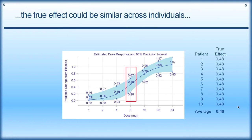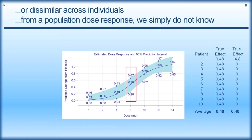However, the true effect could be similar across individuals. So we could imagine that looking at 10 individuals, the average effect is 0.48. Perhaps we would measure these with error, but the true effect could be the same for every individual. Or it could be dissimilar across individuals — from a population dose response, we really don't know. In this second scenario, only patient 1 is having a very large gain, and all the other patients are having no gain whatsoever, and still we end up with an estimate of 0.48 as the average response.